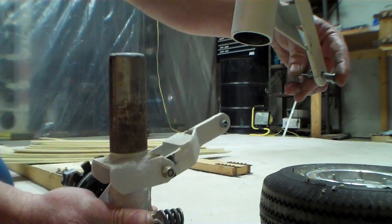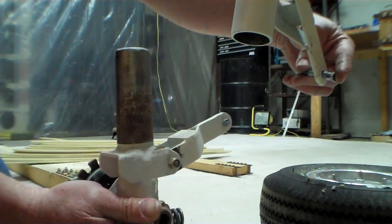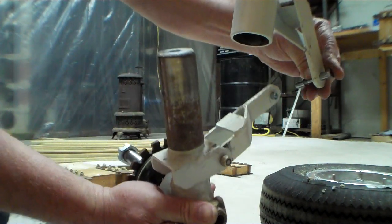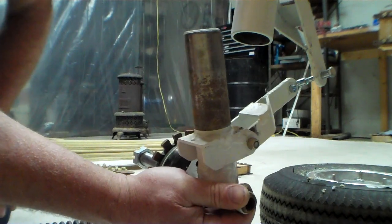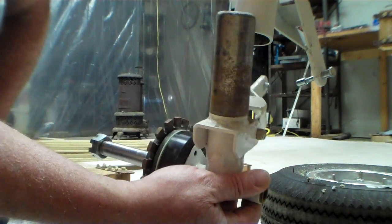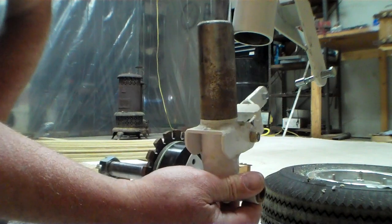Alignment of this gear is done by adding or subtracting washers here in this joint, and that will make the gear either toe in or toe out.